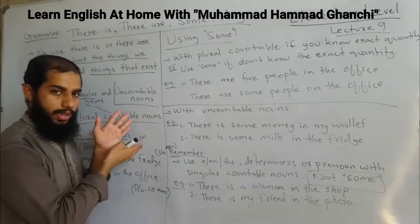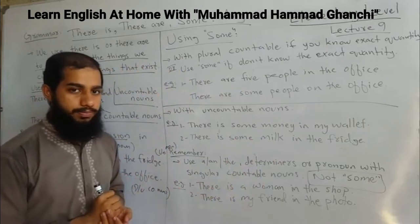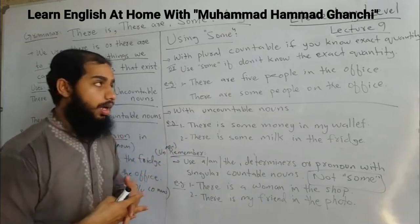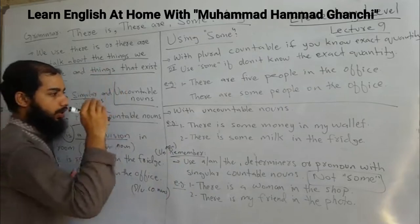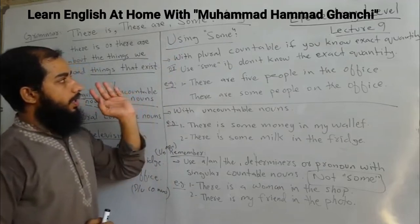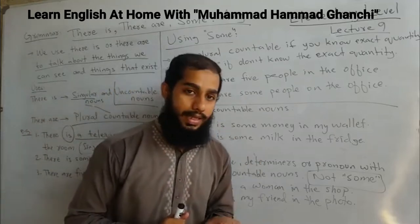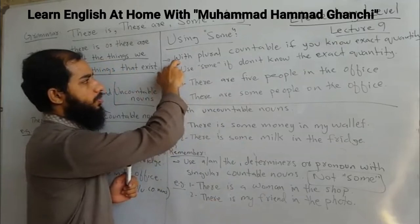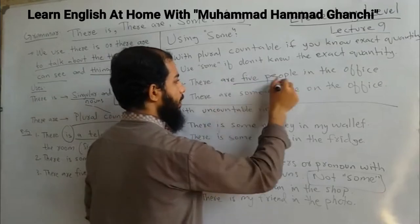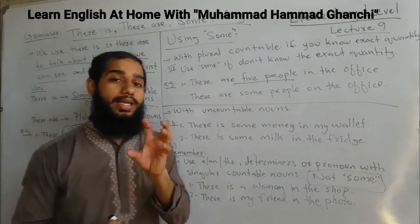To summarize: singular countable noun and uncountable noun go with 'there is'; plural countable nouns go with 'there are.' Now it's time for 'some.' When you use 'there is' or 'there are,' there is a direct connection with 'some.' There are basically two uses: number one — with plural countable nouns when you know the exact quantity; use 'some' when you don't know the exact quantity.